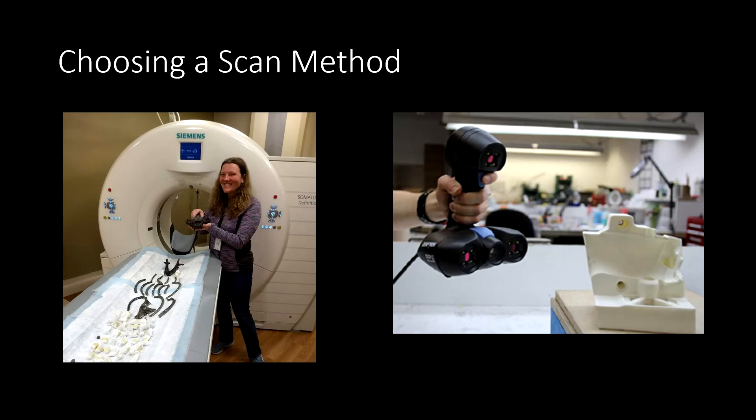Choosing a scan method depends on your available resources and the ultimate goals of this project. The biggest advantage CT scanning has over surface scanning is that it captures the internal morphology of the object.